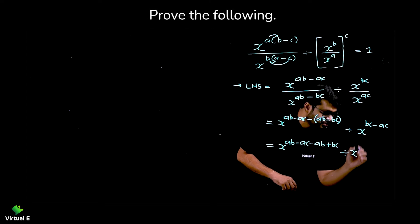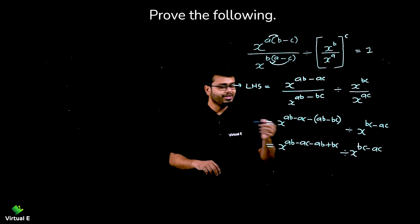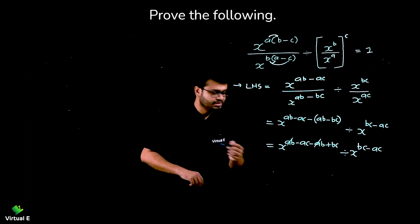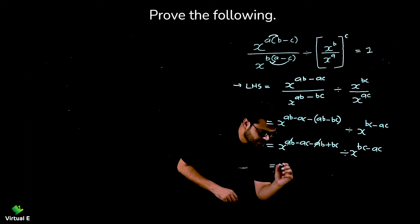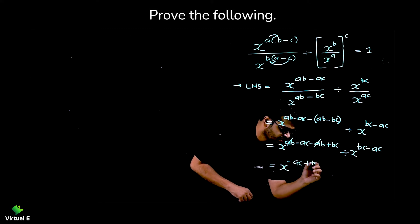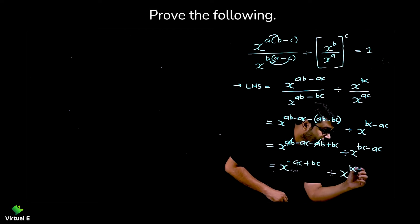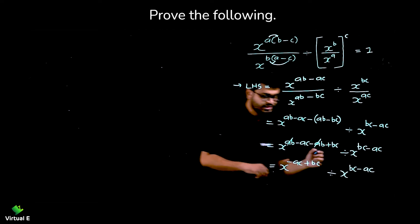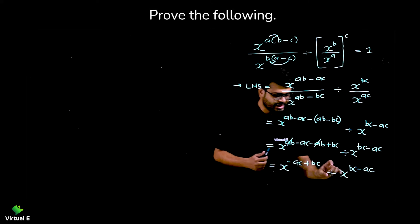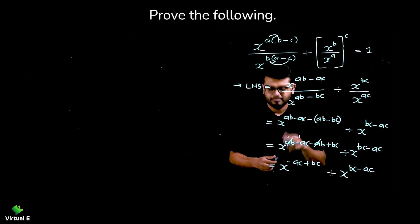Divide by X raise to BC minus AC. Now let's simplify further. See AB and minus AB get cancelled. So what's left over here: X raise to minus AC plus BC, divide by X raise to BC minus AC.